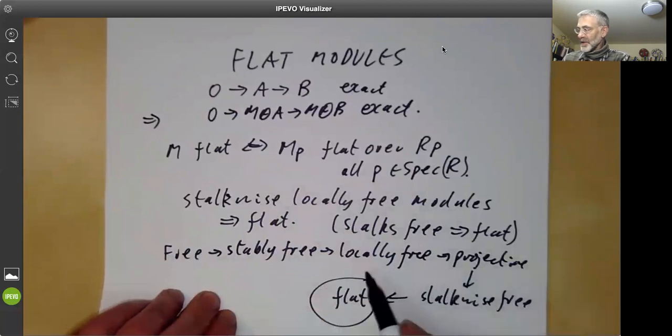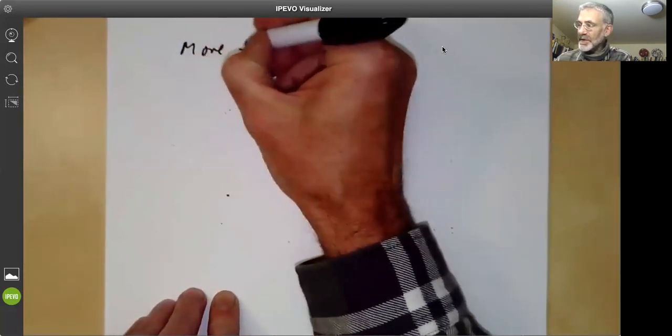Whereas if you're talking about, say, projective modules or stably free modules, they're actually much rarer. So not only are all these projective and locally free and so on modules flat, but also we have some more examples.